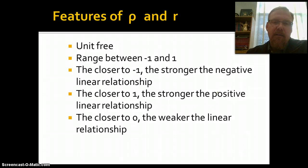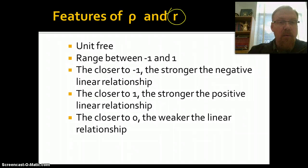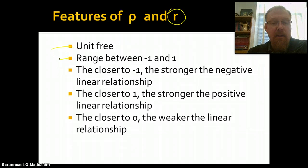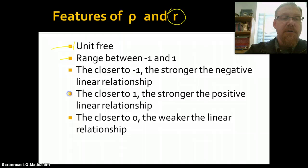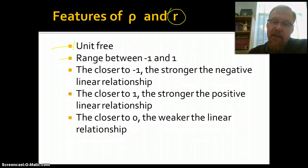Now there are some features of rho and R, in particular remember we're thinking about R, that are unique. One is they're unit free. It's a set of numbers that ranges between negative one and positive one. But there's no unit associated with that. There might be some when we interpret it, but the values themselves of rho and R are unit free. They do range from negative one to positive one. The closer to negative one, the stronger the negative linear relationship. And the closer to positive one, the stronger the positive linear relationship. And then, you might have guessed, the closer to zero, the weaker the linear relationship is.